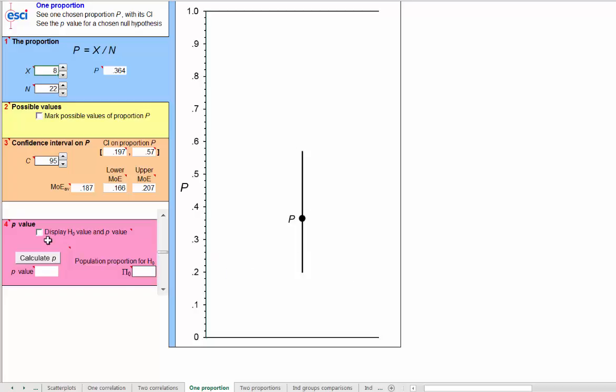You could take a p-value approach and say, here is the null hypothesized value. I'll use this slider to bring it down to 0.25. There we go, 0.25, pi nought, the hypothesized proportion in the population, 0.25, if there was just random guessing.